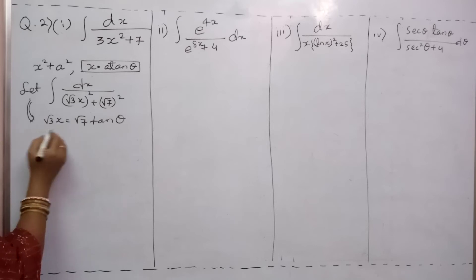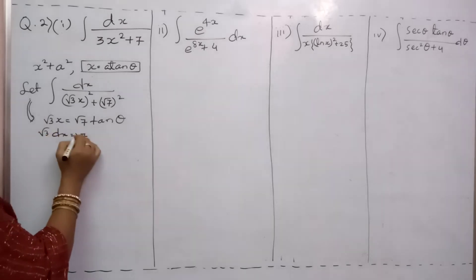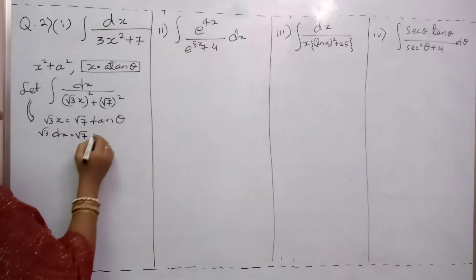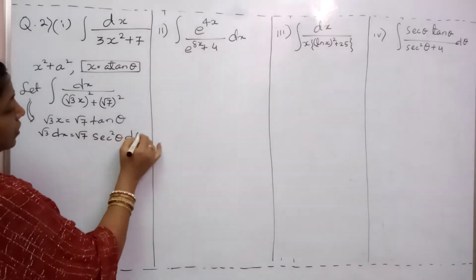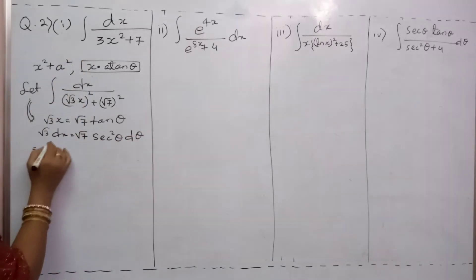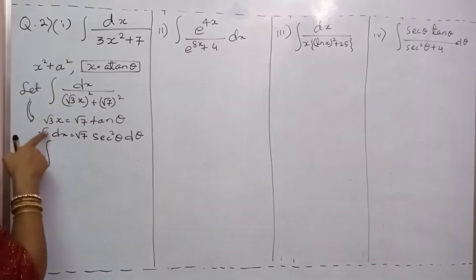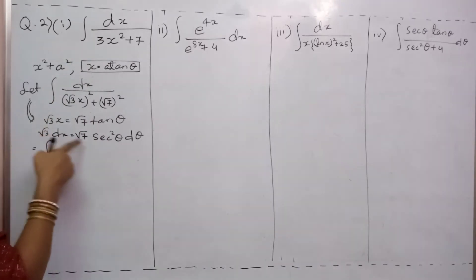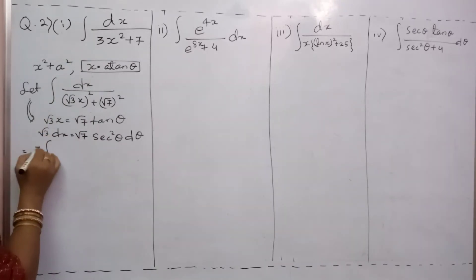Now differentiate this with respect to x. What you will find: √3 dx equal to √7 · sec²θ · dθ. Now substitute it here. So now what is our integration? For dx, take this √3 to the other side: dx = (√7 / √3) sec²θ dθ. This is your numerator dx part completed.